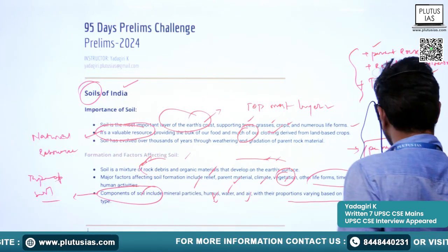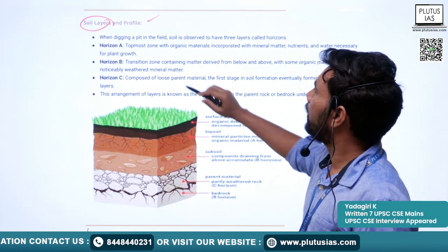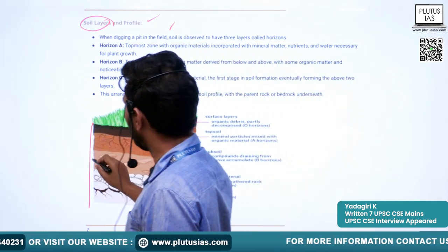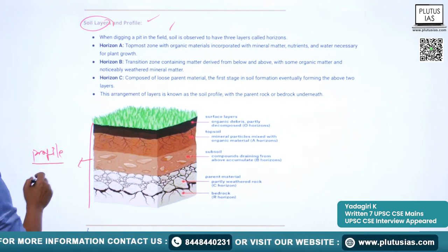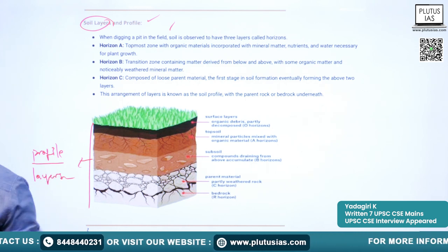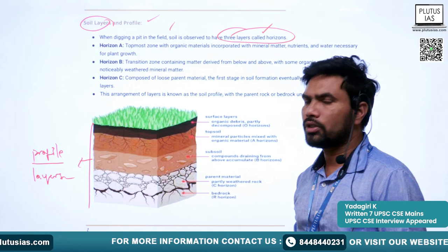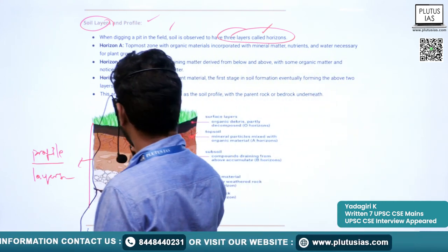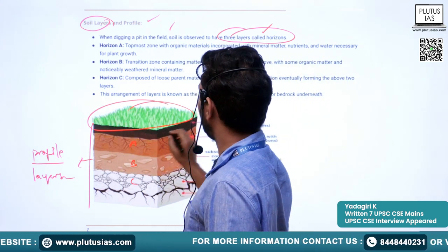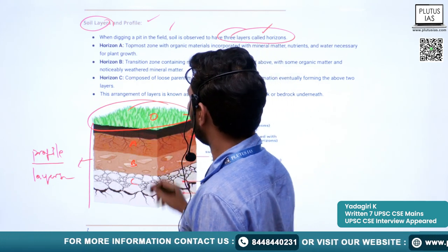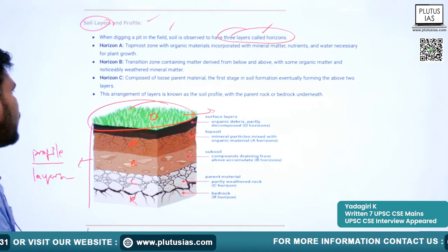Now we look at soil layers and the soil profile. When digging a pit in the field, we can observe the layers of the soil — scientifically called the soil profile. The three main layers are called soil horizons: Horizon A, Horizon B, and Horizon C. The surface material is generally called Horizon O, and the parent rock or bedrock is also known as Horizon R.